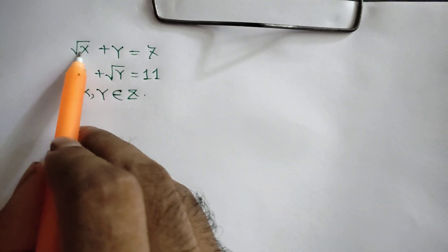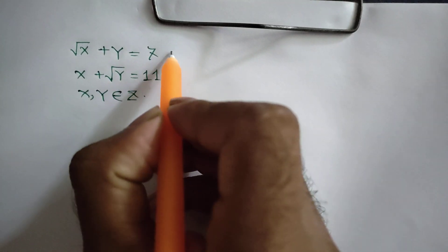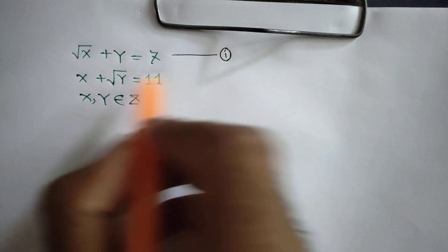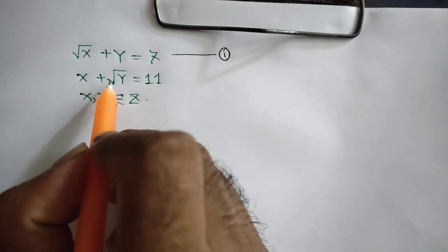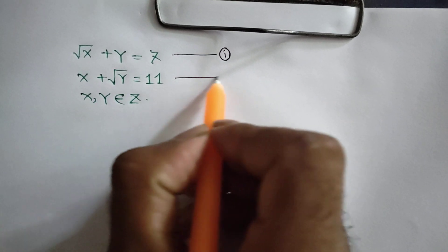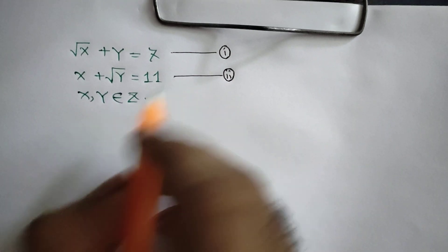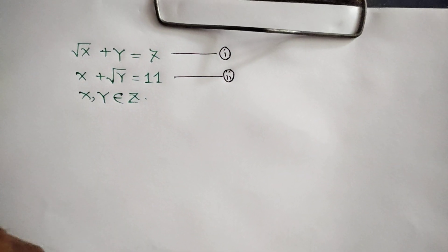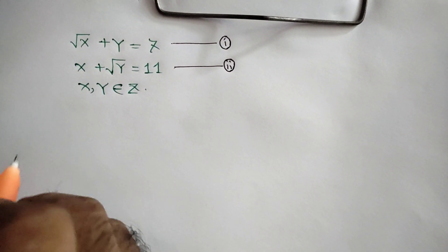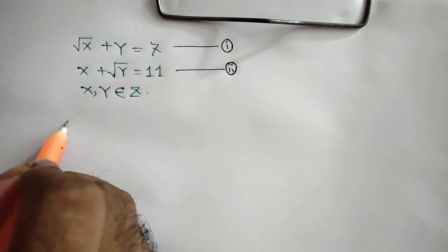Square root of x plus y is equal to 7 — this is called equation number one. And x plus square root of y is equal to 11 — this is called equation number two. Now subtract equation two from equation one.